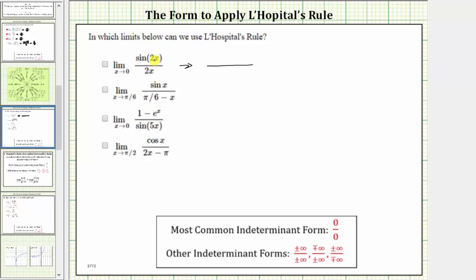As x approaches zero, sine two x approaches sine zero, and two x approaches zero. Because sine zero equals zero, this limit is in the form of zero divided by zero, which is one of the indeterminate forms in which L'Hopital's rule applies, and therefore we could apply L'Hopital's rule to help determine this limit.